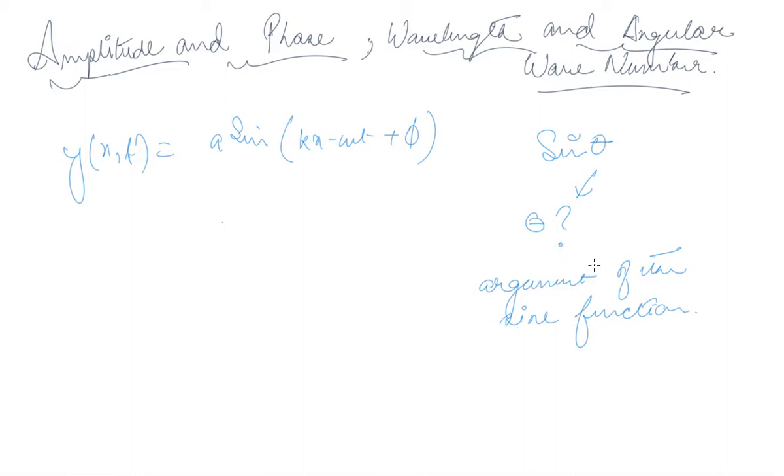It is appearing as the argument of the sine function. Therefore, theta is this, corresponding to this. So if we define theta, we are defining this for kx minus omega t plus phi. So this is the argument of the sine function, and this particular argument is known as phase of the wave.